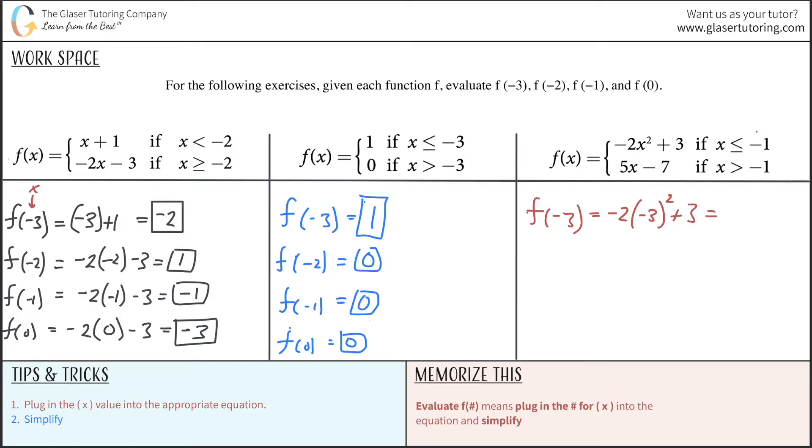All you have to do now is simplify. So this becomes a positive 9. Positive 9 then times a negative 2 is going to be a negative 18. Then when you add 3 to it, we get a negative 15 as our final result. Easy.